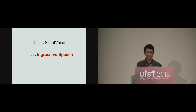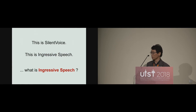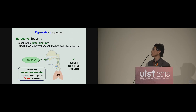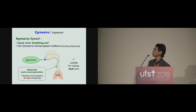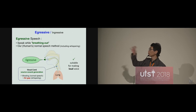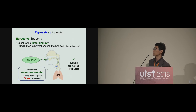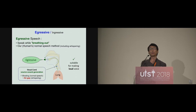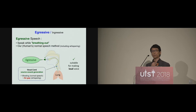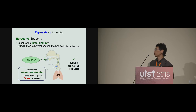This is ingressive speech. What is ingressive speech? There are two types of speech method: ingressive and egressive. Egressive speech means speaking while breathing out — the airflow goes from the lungs to outside. This is the normal human speech method, including whispering. In this mode, our vocal cords make the source sound — they vibrate during normal speech.